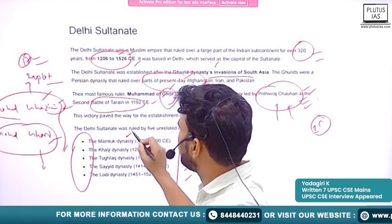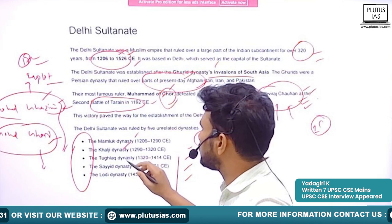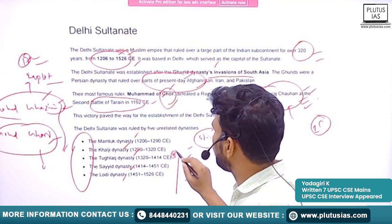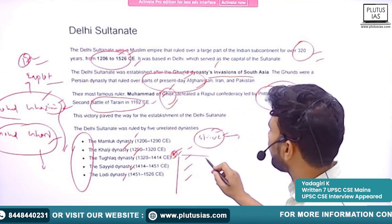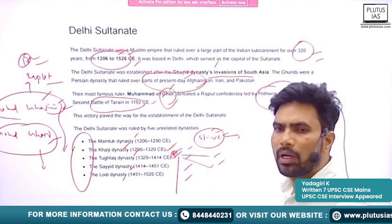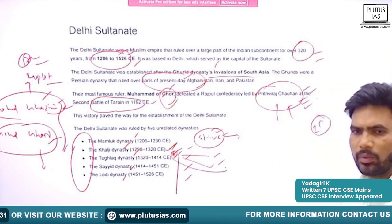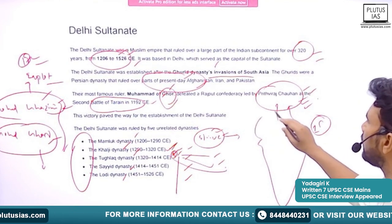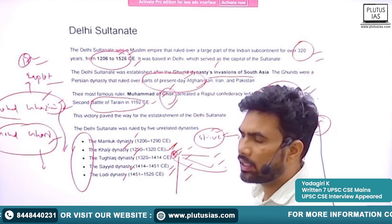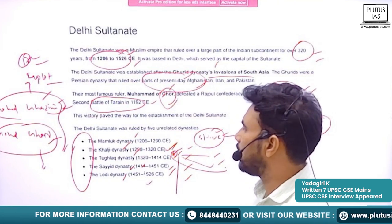Delhi Sultanate existed for a period of 320 years, in which we will see five dynasties ruling. Those dynasties are: Mamluk or Slave Dynasty, Khalji Dynasty, Tughlaq Dynasty, Sayyid Dynasty, and Lodhi Dynasty. The most important dynasty is the Tughlaq Dynasty. The Khalji Dynasty is also famous. The expansion into other parts of India started in the Khalji Dynasty. By the Tughlaq Dynasty, further conquest expanded. Almost all of the Indian subcontinent came under the control of Delhi Sultanate.